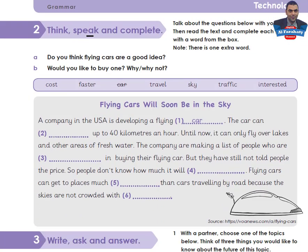Activity 2: Think, read, and complete. Talk about the questions below with your group, then read the text and complete each gap with a word from the box. Note: there is one extra word. The questions are: A) Do you think flying cars are a good idea? B) Would you like to buy one? Why or why not? You are asked to talk about these questions with your group at school.